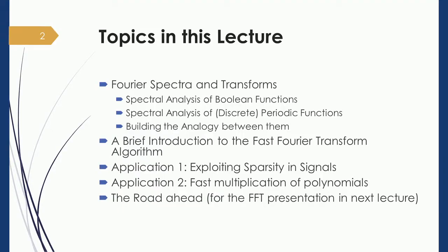Discrete periodic functions are periodic functions sampled at discrete points in time. Such functions can be represented as vectors based on the number of sampled points. The spectrum of such a discrete periodic function can be viewed as an alternative basis, and this establishes a clear analogy between the spectral analysis of Boolean functions and that of discrete periodic functions, giving us a unified way to look at spectral analysis.